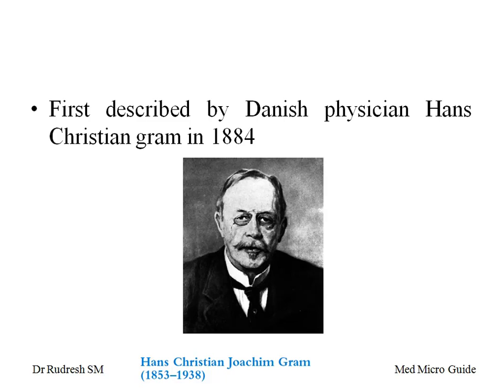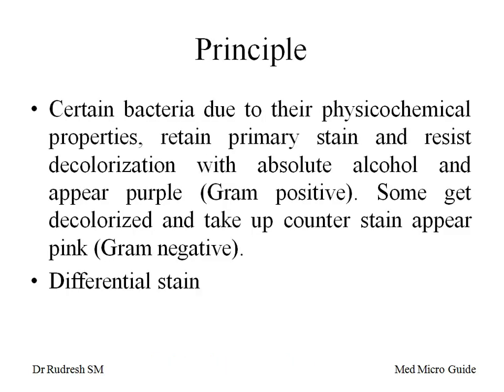Gram staining was first described by Danish physician Hans Christian Gram in 1884. The principle of Gram staining is: certain bacteria, due to their physicochemical properties, retain the primary stain and resist decolorization with absolute alcohol and appear purple — they are called gram positive. Some get decolorized and take up the counter stain and appear pink — they are called gram negative. Gram staining is an example of differential staining.